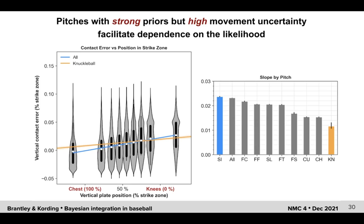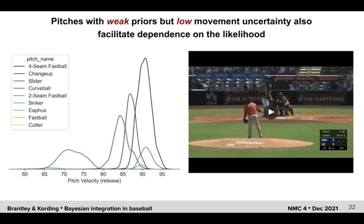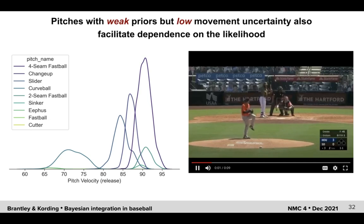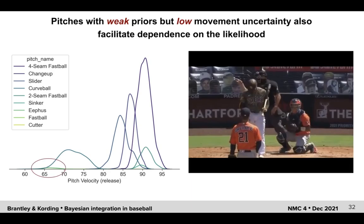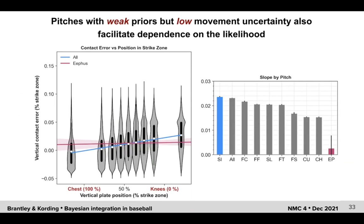As another example, we consider pitches with weak priors but low movement uncertainty. For this, we consider the eephus, which is a highly uncommon pitch thrown with a very slow velocity and an arcing pattern. For the few pitchers that use this pitch, it is usually only a small part of a much larger repertoire, as shown for this pitcher here. Similar to the knuckleball, we observe a slope significantly smaller and closer to zero than other pitch types. Again, this implies that in the presence of a weak prior and low movement uncertainty, batters rely on the observation of the pitch.